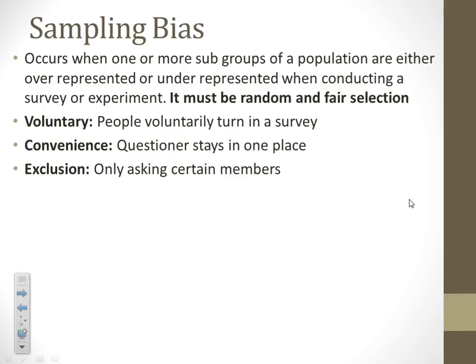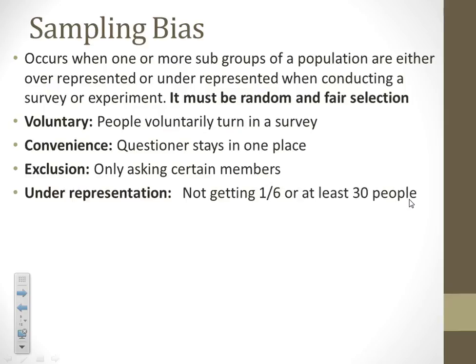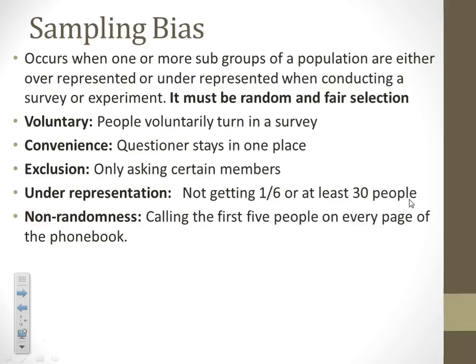Exclusion: sometimes researchers will purposefully only ask certain people because they know what their answer is going to be, or they just don't associate with other people. Underrepresentation is just not asking enough people. You should have at least one-sixth of a population to have fair representation, or at least thirty people — something to keep in the back of your mind.